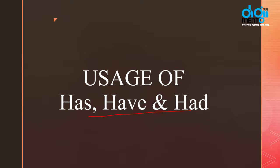Specially agar hum has and have ki baat karte hain, kyunki ye ek word aisa hai joki kabhi kabhi hamare tenses mein as a helping verb bhi use hota hai, aur iske alawa ye main verb ki tarah bhi use hota hai. Toh is video mein hum baat karne waale hain usage of has and have as the main verb. Aur agle video mein hum baat karenge usage of get as a main verb. Toh chaliye shuru karte hain hamaara aaj ka lesson which is the usage of has, have and had.